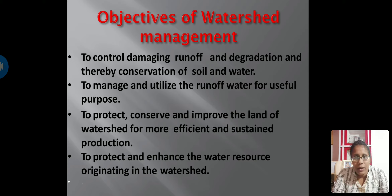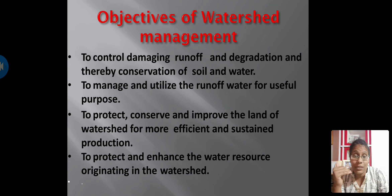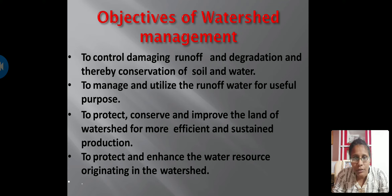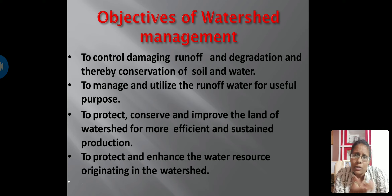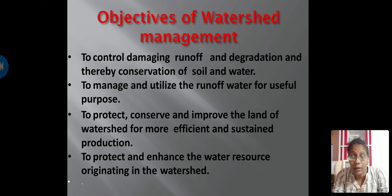Since watershed water can be used in agriculture even at times of water scarcity, crop production increases, trees also increase, and they hold the topsoil firmly, thereby preventing soil erosion. Trees also help with afforestation. So watershed management supports both water conservation and land restoration.